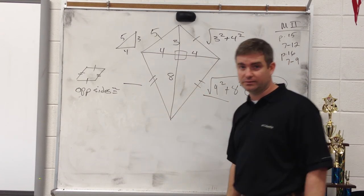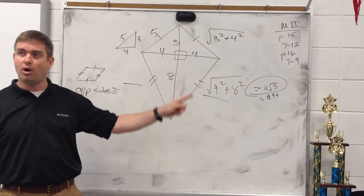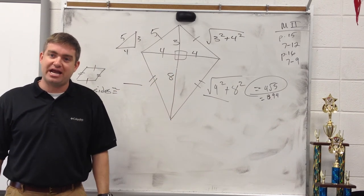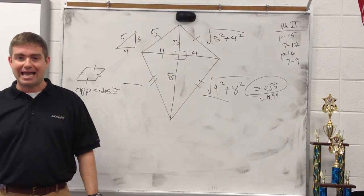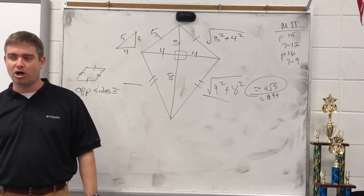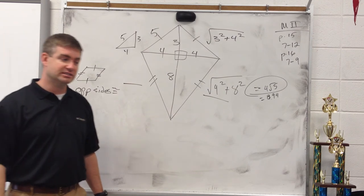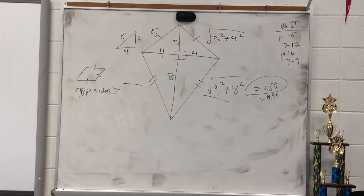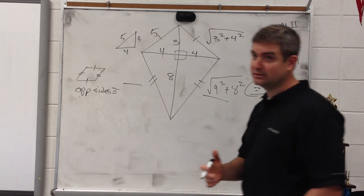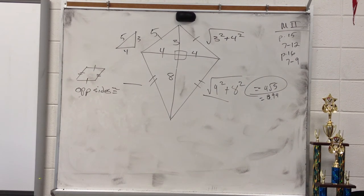This side over here is 4 root 5 as well, because the two tick marks mean they must be the same. The diagonals of a kite are perpendicular. What other quadrilateral shares that property? Rhombuses. Rhombuses and kites — the diagonals are perpendicular. And isosceles trapezoids and rectangles — the diagonals are congruent. Make those connections.